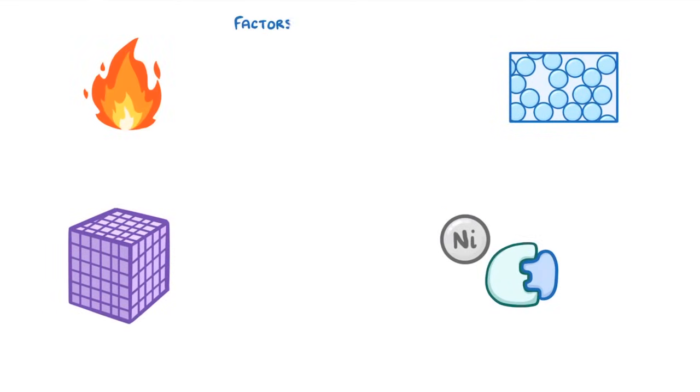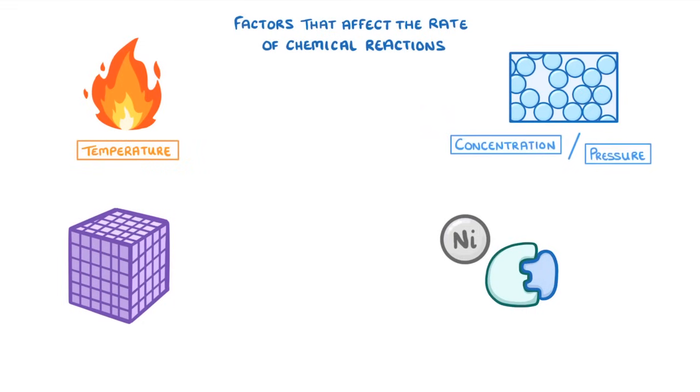In today's video, we're going to look at the factors that affect the rate of chemical reactions. So temperature, concentration or pressure, surface area, and the presence or absence of a catalyst.